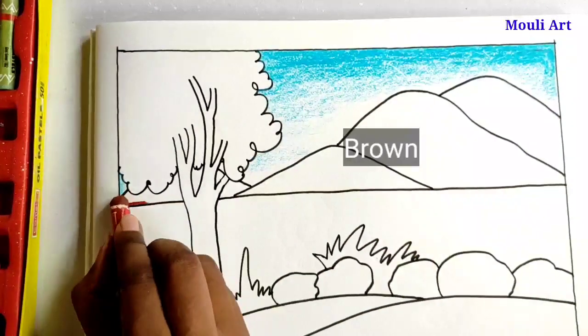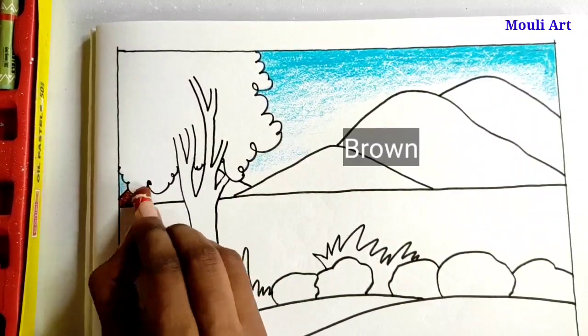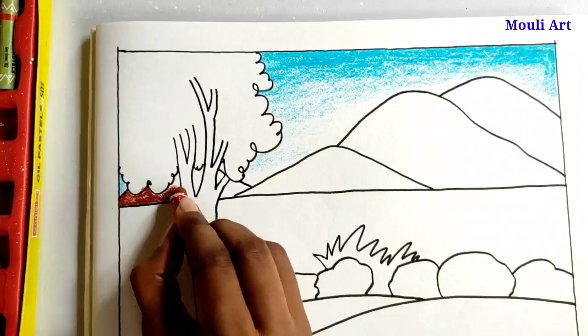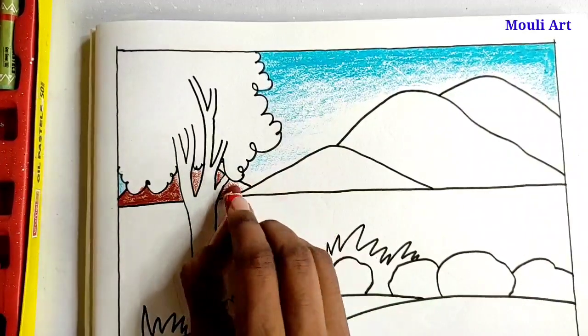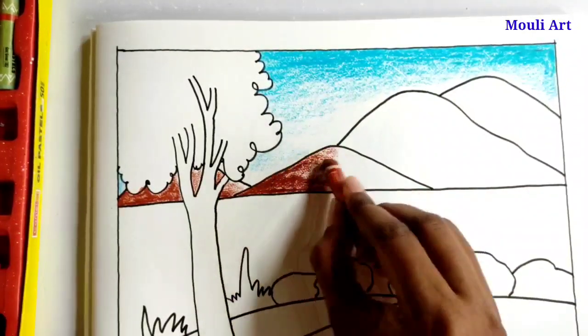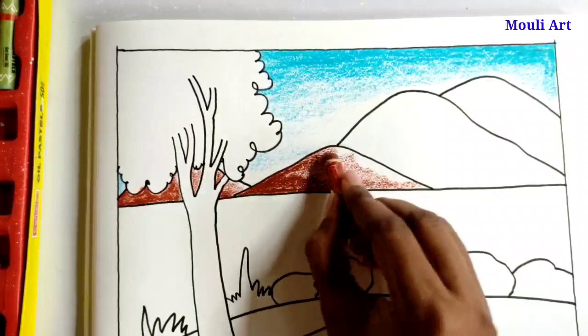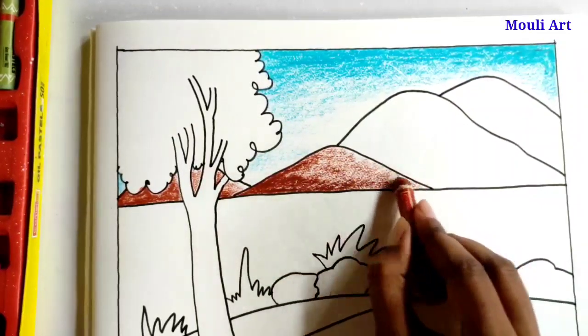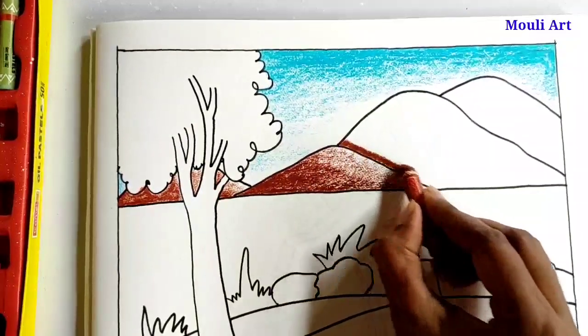Now color the mountain. The color will be darker at the bottom of the hill and lighter at the top. Brown color. The mountain's lower part is dark and upper part is lightly colored.